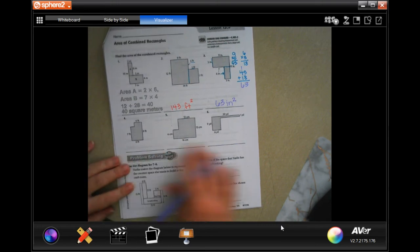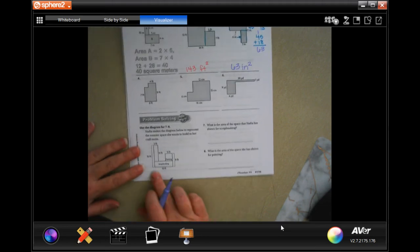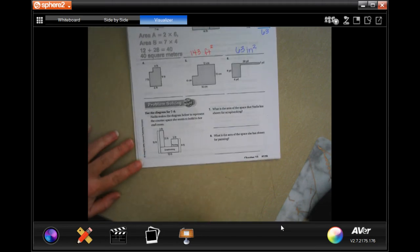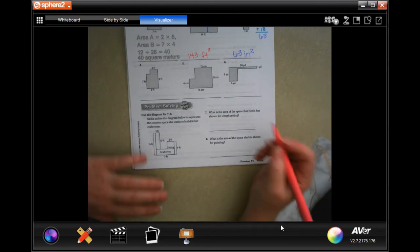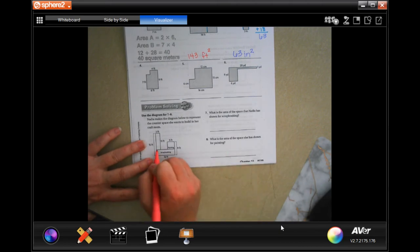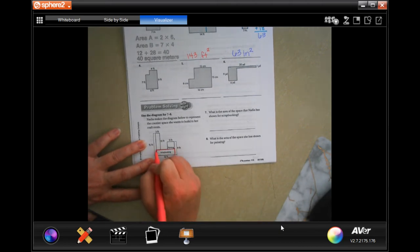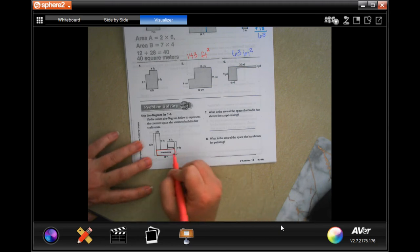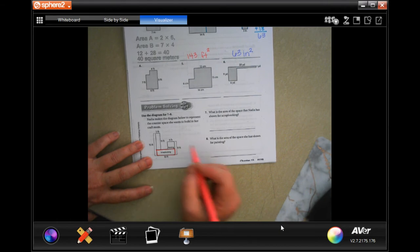I'm going to let you guys do 4 through 6. We're going to go down and we're going to use the diagram for 7 and 8. It says what is the area of the space that Nadia shown for scrapbooking? So just this.